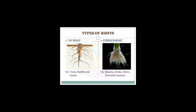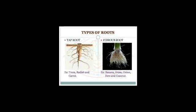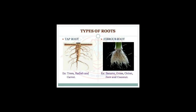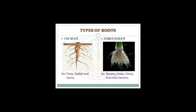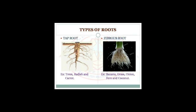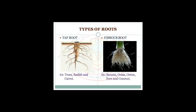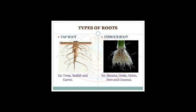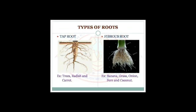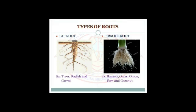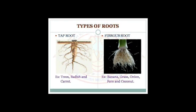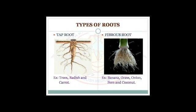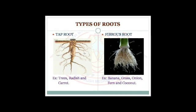Let us learn about the different parts of a plant. First: roots. Roots mostly grow under the soil. They hold the plant firmly in the soil, absorb water and minerals from the soil, and transport these up to the stem of the plant. There are two types of roots: tap root and fibrous root.